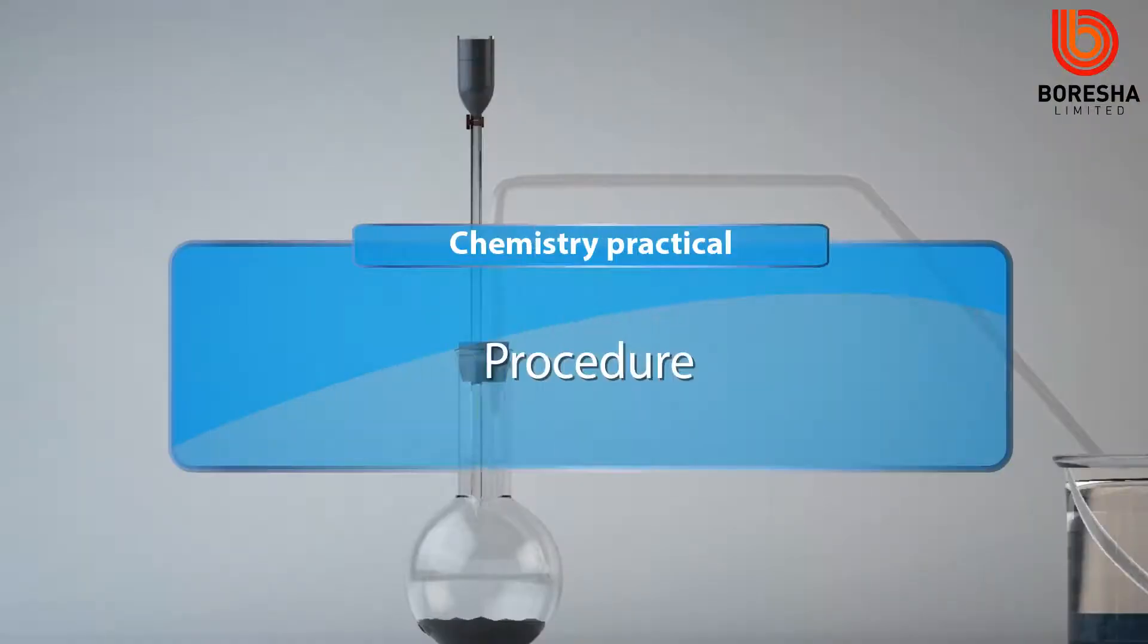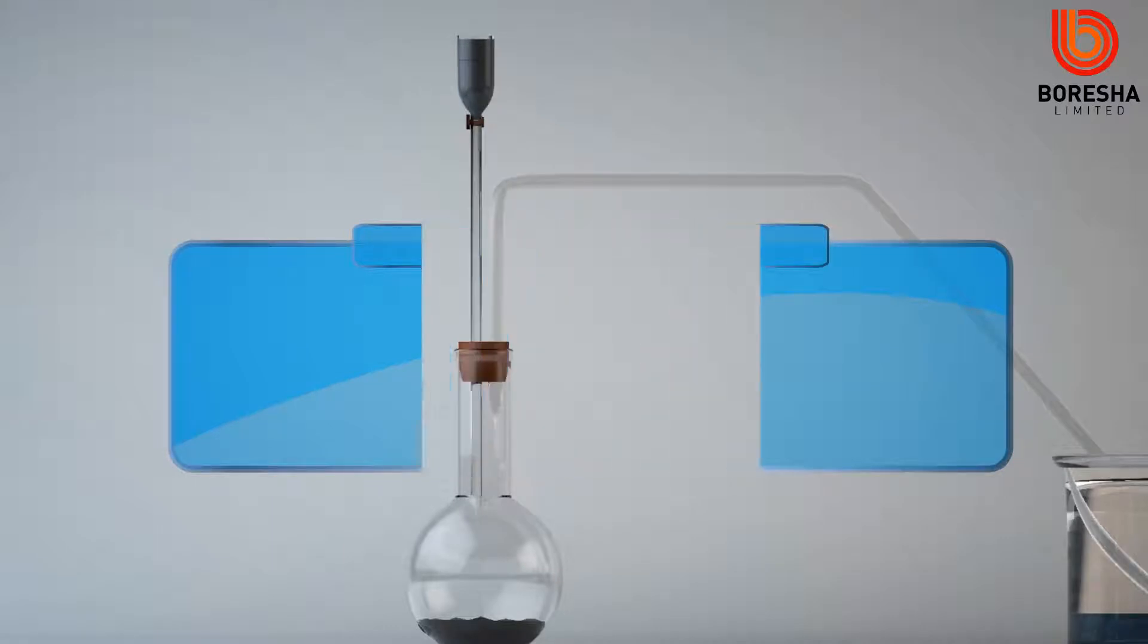Procedure: Open the tap to allow hydrogen peroxide into the flask containing manganese 4-oxide.